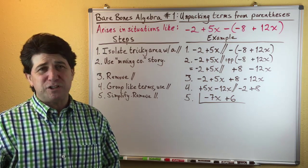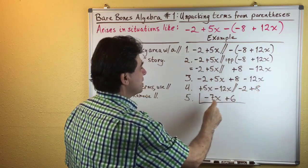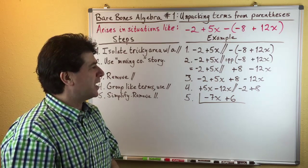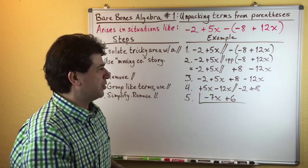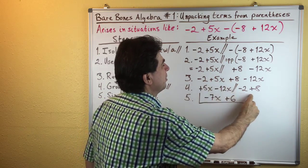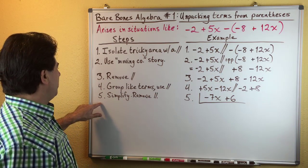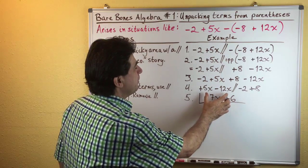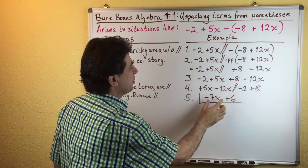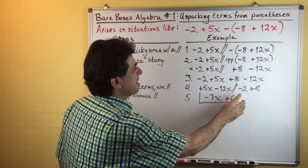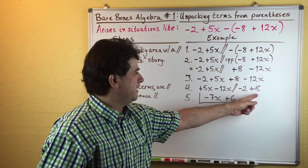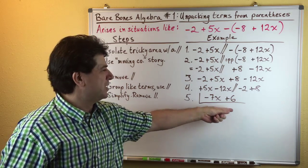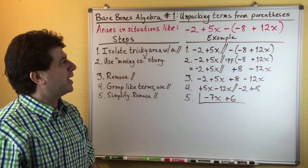Step four is to group like terms. We have two x-terms and two number terms: 5x and negative 12x go together on the left, separated by a double slash from the number terms negative 2 and positive 8. Step five is to simplify each pair using what I call the mixed sign rule: positive 5x and negative 12x gives negative 7x, and negative 2 plus 8 gives positive 6. We remove the double slash and get negative 7x plus 6, our simplified expression.